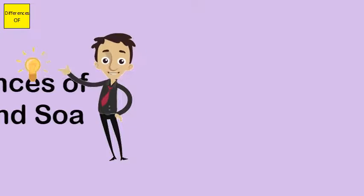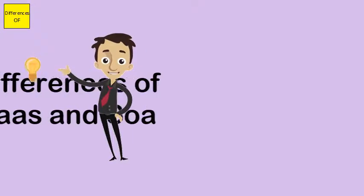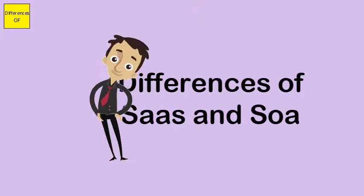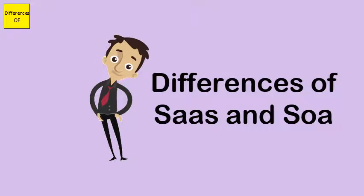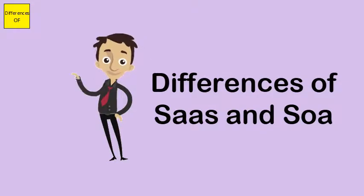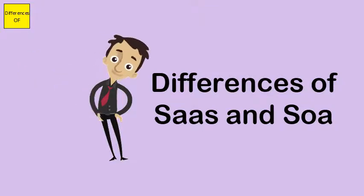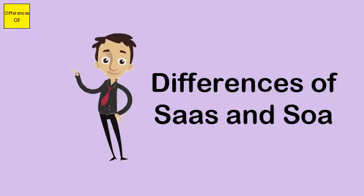The difference between SaaS and SOA: SaaS stands for Software as a Service, while SOA stands for Service-Oriented Architecture. SaaS is a category of cloud computing in which the main resources available as a service are software applications.